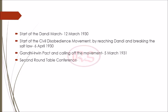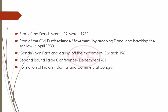Now let's talk about the 2 business organizations formed in India before independence. The first was the Indian Industrial and Commercial Congress, formed in 1920. The second is FICCI — Federation of Indian Chambers of Commerce and Industry — formed in 1927.